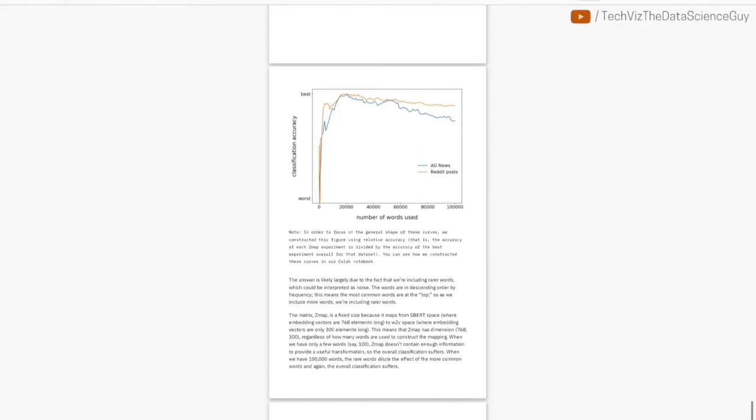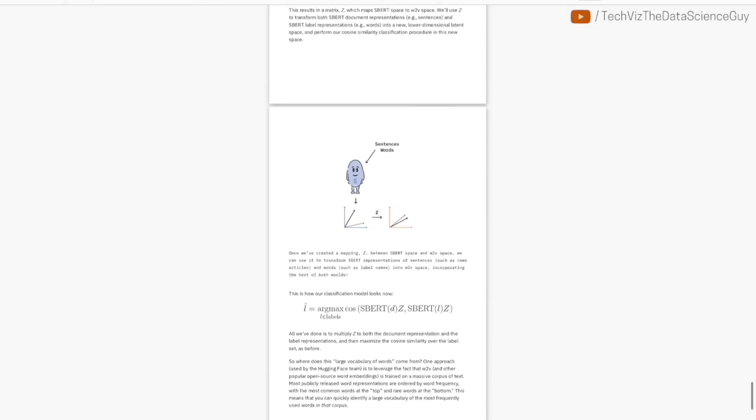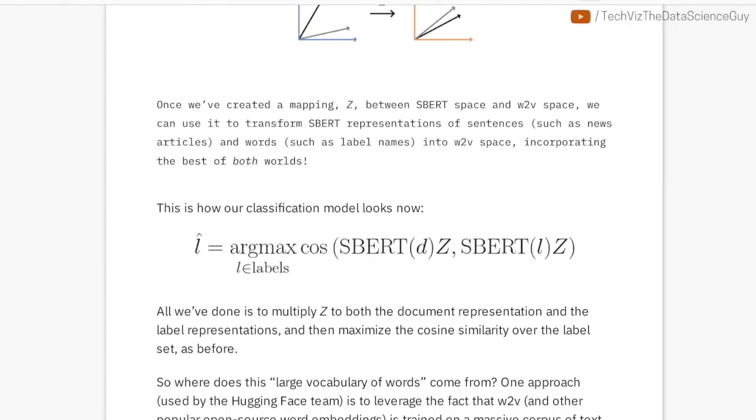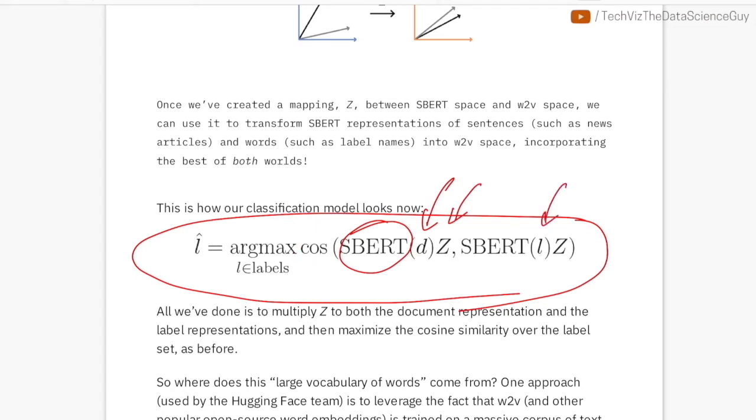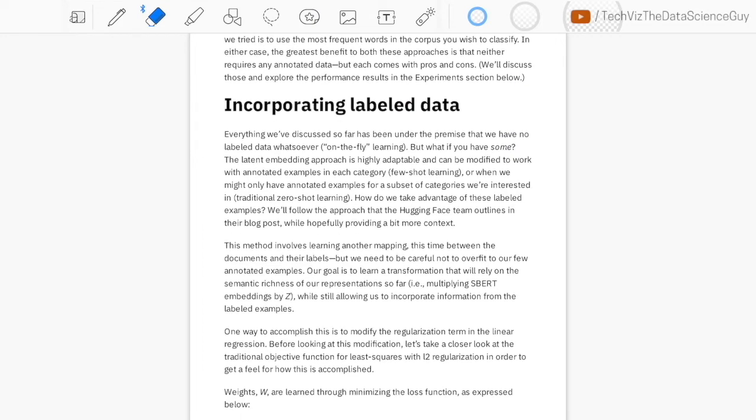So till now, whatever we have seen is with respect to if you have no data at all and you want to learn a classification function. But what if now you have some data? This is the mathematical equation. If you don't have any data and the ZMAP part what we discussed, you have a document B, you pass it through sentence BERT, you multiply it with the Z matrix, and then you calculate some kind of similarity, the U is cosine, and whichever label gets the highest cosine similarity, or in other words is closest to the document B, is what you choose as a final label.